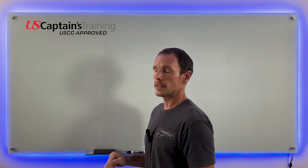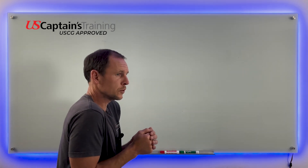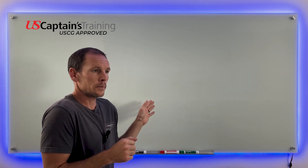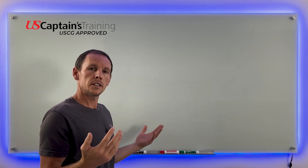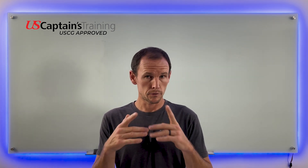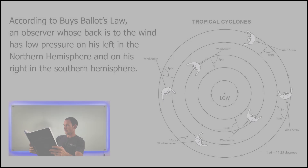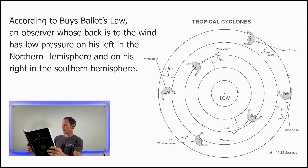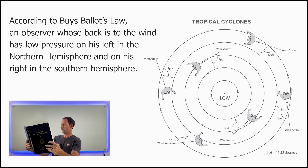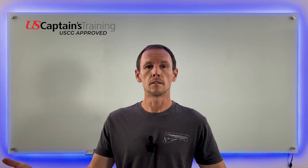It's all the same thing: whether you face the wind and it's to your right and behind you, or whether your back is to the wind and it's to your left and a little bit in front of you — it states the same thing. According to Buys Ballot's law, an observer whose back is to the wind has the low pressure on his left in the northern hemisphere and on his right in the southern hemisphere.